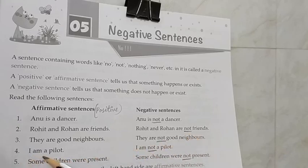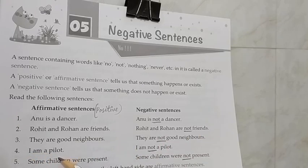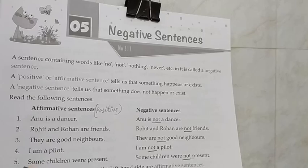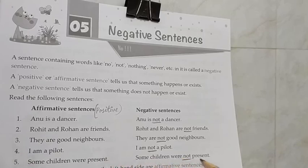Number four: I am a pilot. Are you a pilot? If you are not, add 'not': I am not a pilot. Negative sentence. Fifth: Some children were present in the school. Some children were not present. When you add 'not', they were not present. Negative sentence.